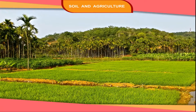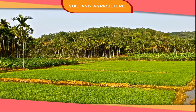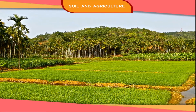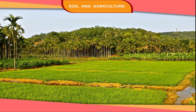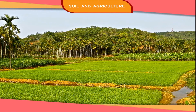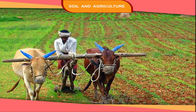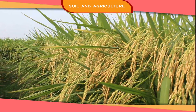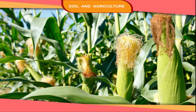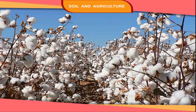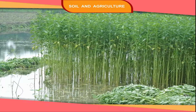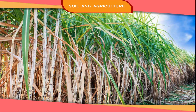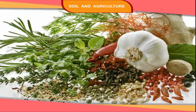Agriculture is the main source of livelihood of the people of India. Our farmers grow many types of crops. These are wheat, paddy, millet, maize, cotton, jute, sugarcane, tea, coffee, spices, etc.